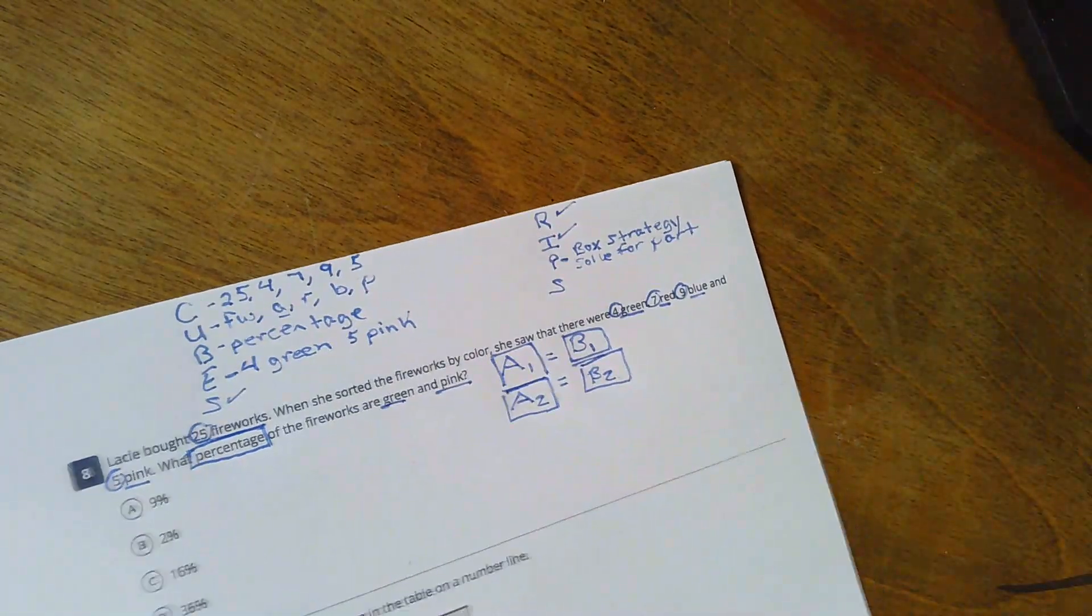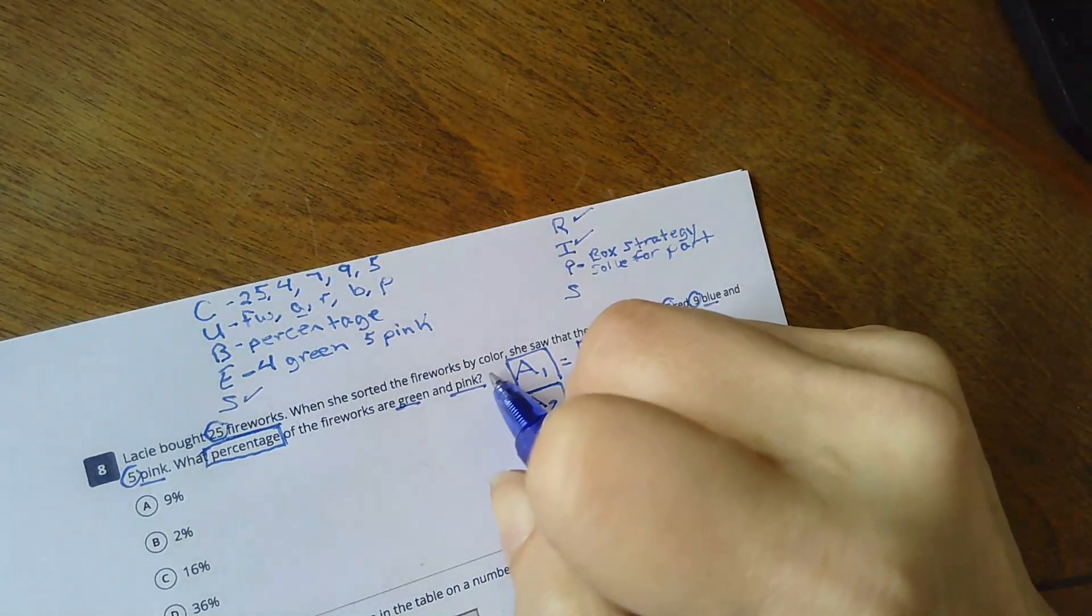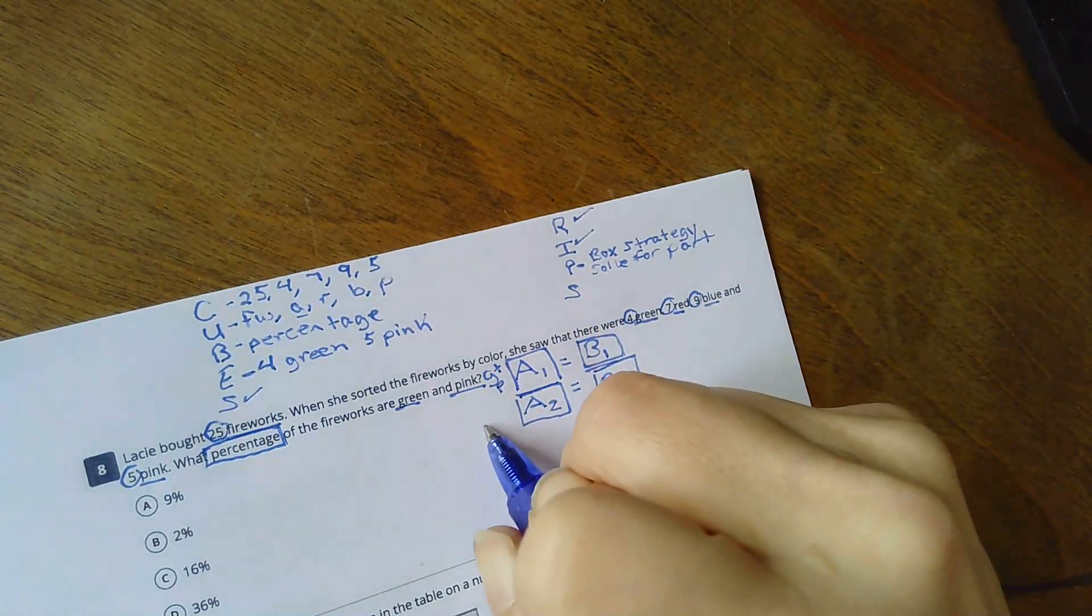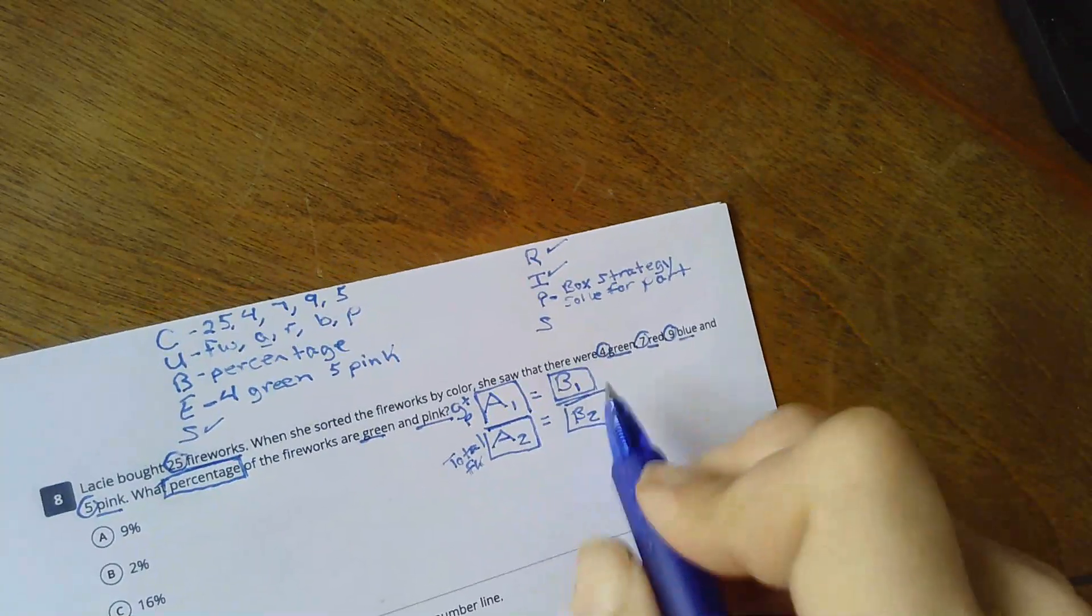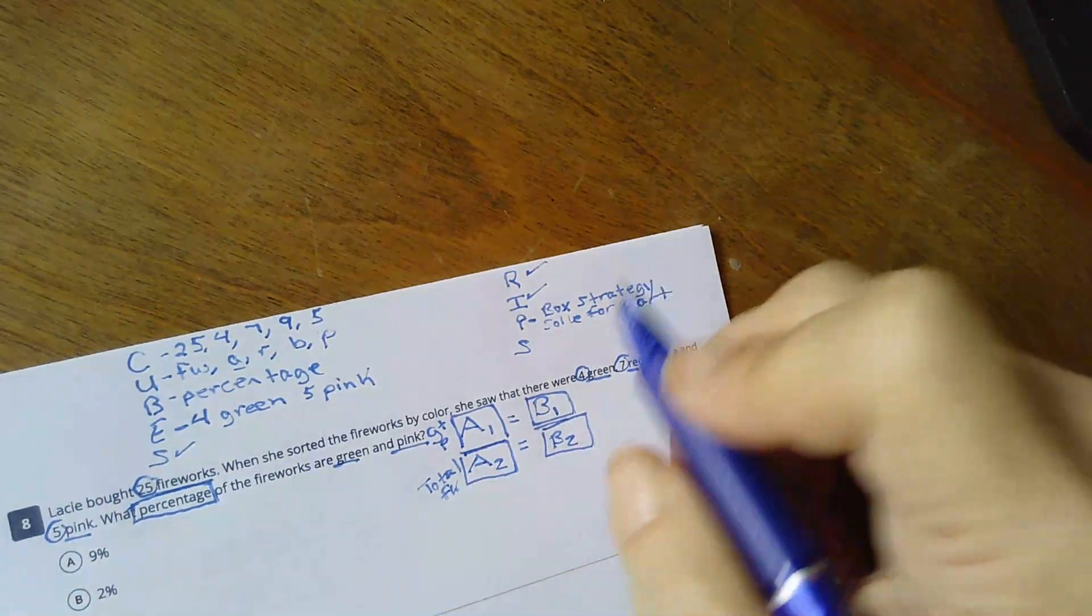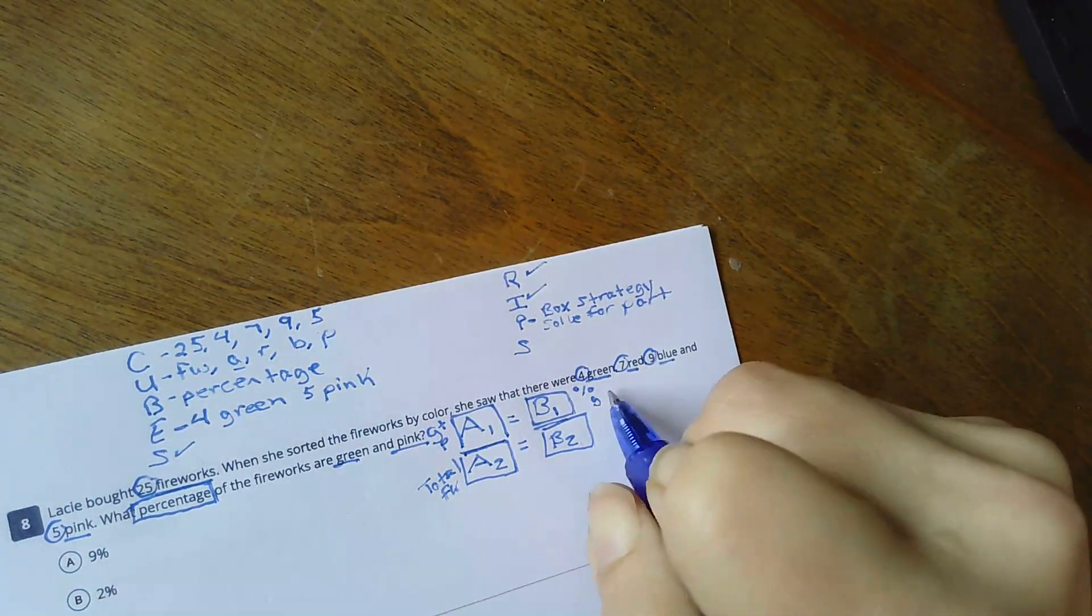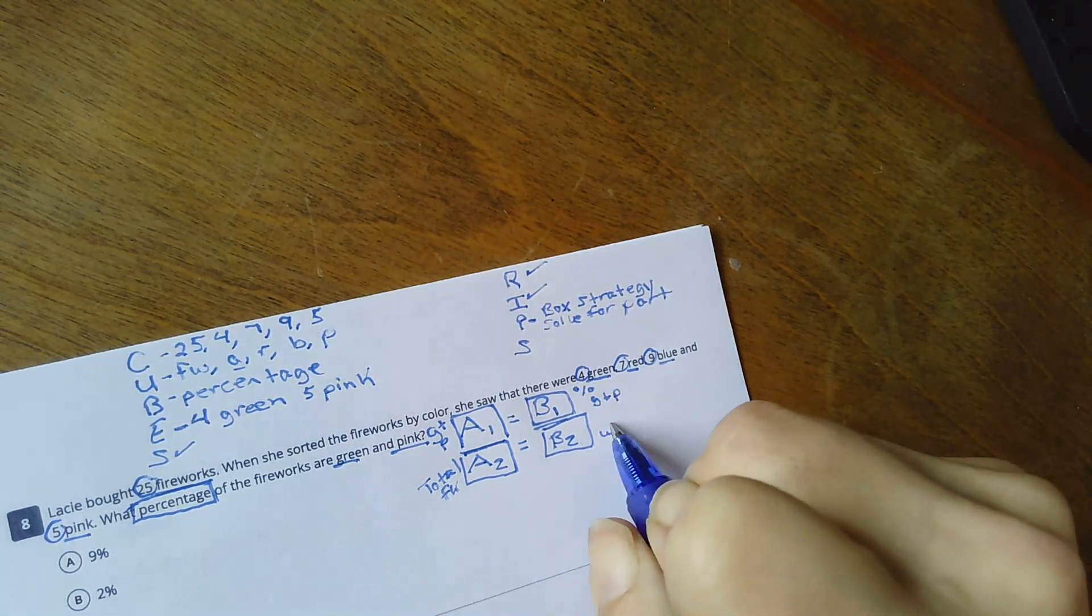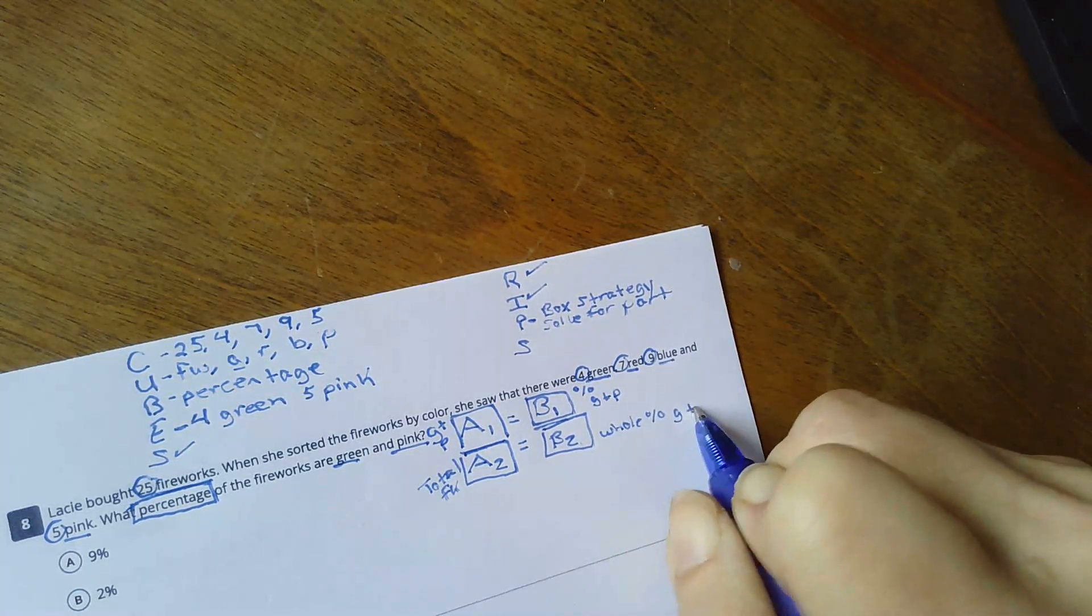And A1, we're going to say is the green and pink, right? Green and pink. And this is going to be my total fireworks. Okay. Well, the ratio is, this is my percent of green and pink. And this is my whole percent of green and pink.